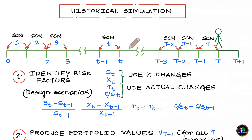In this video, let's take a look at the historical simulation approach for the purpose of estimating the Value at Risk (VaR) of a portfolio, given a choice of confidence level and a given horizon. The historical simulation approach falls into the camp of non-parametric approaches, wherein we do not impose any distribution-related assumption on the chosen random variable of interest.